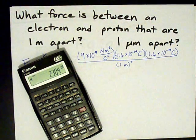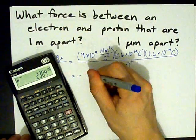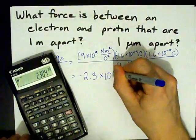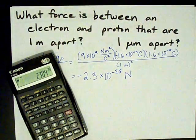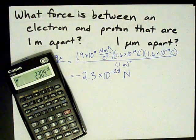All right. So, the force that they feel, and I forgot a negative on this sign, so I'm just going to add it here, is 2.3 times ten to the negative 28 newtons. That is such a piddly small amount. They probably don't even feel attracted to each other at all.